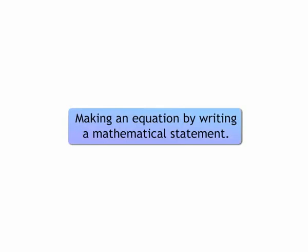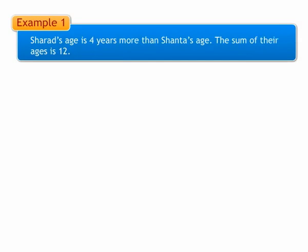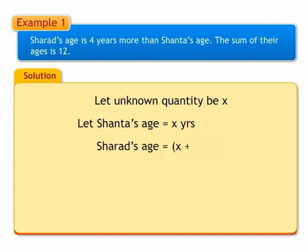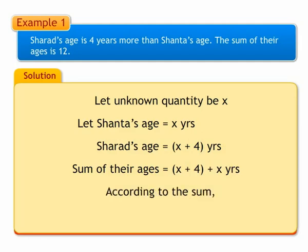Now, let us see how to make an equation by writing a mathematical statement. Let us understand with an example. Example 1: Sharad's age is 4 years more than Shanta's age. The sum of their ages is 12. Let Shanta's age be x years. Sharad's age is x plus 4 years. Therefore, sum of their ages will be x plus 4 plus x years. According to the sum, the sum of their ages is 12. Hence, we get a mathematical statement as x plus 4 plus x is equal to 12.